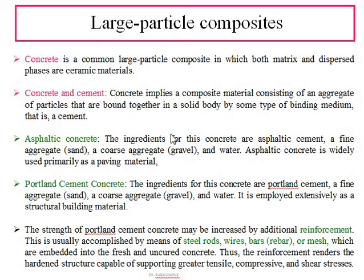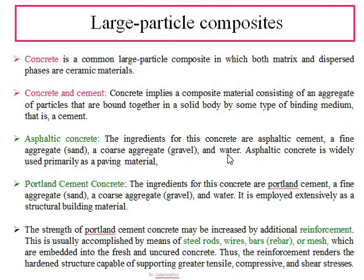There are two types of concrete: asphalt concrete and Portland cement concrete. Asphalt concrete uses asphaltic cement with a fine aggregate (sand, small particle size) and a coarse aggregate (gravel, higher particle size), along with water. Asphalt concrete is widely used as a paving material for tiles and roads.